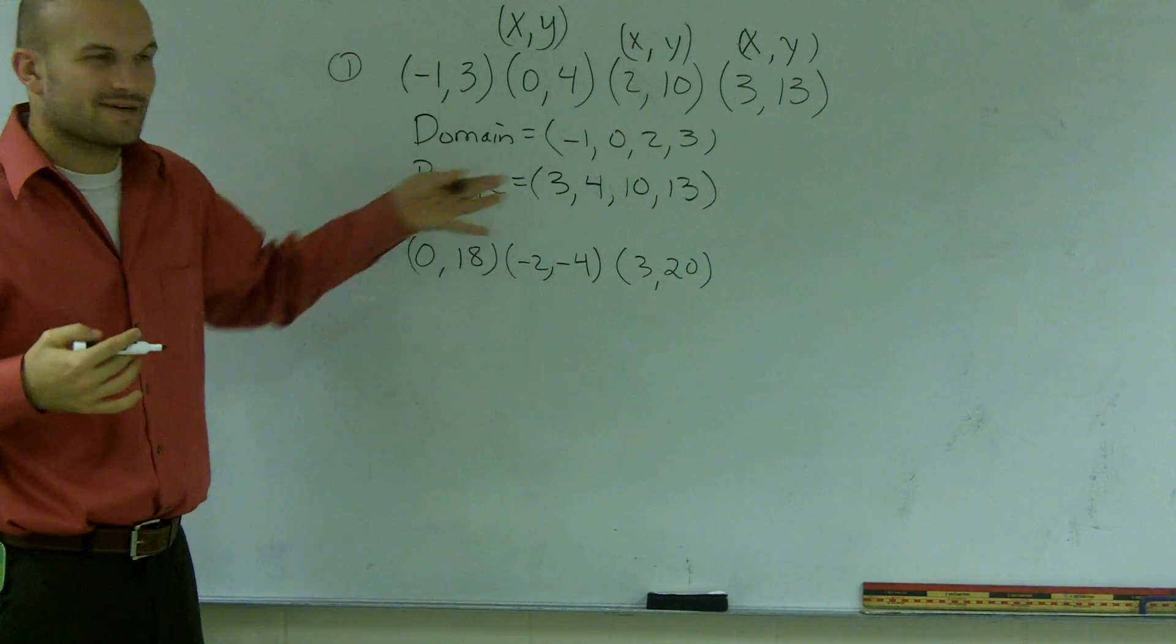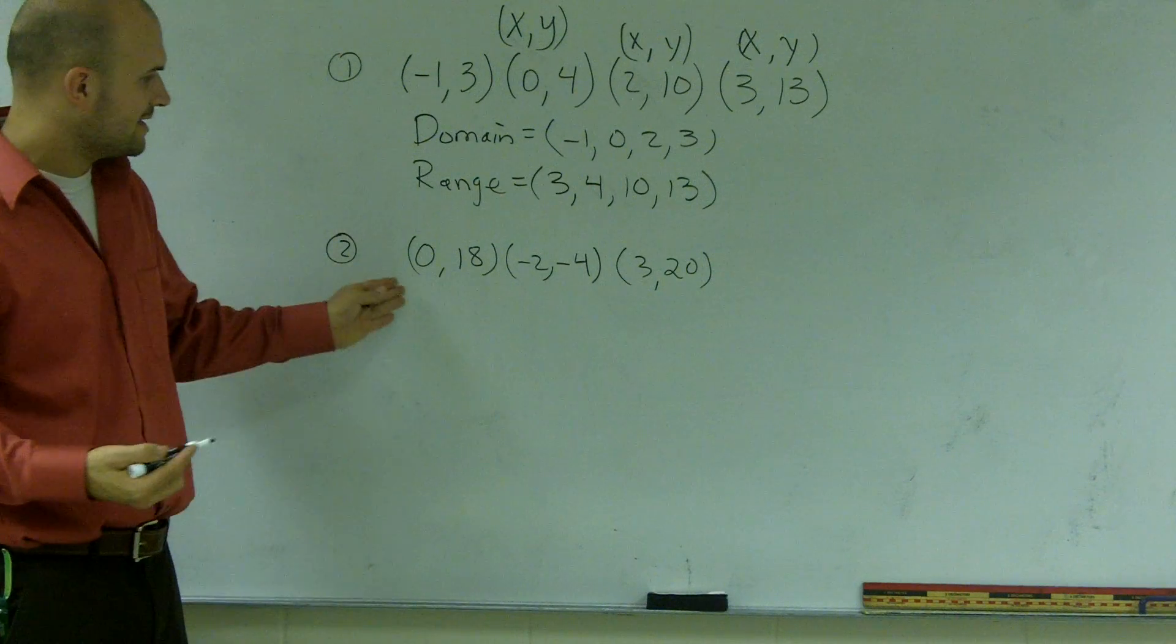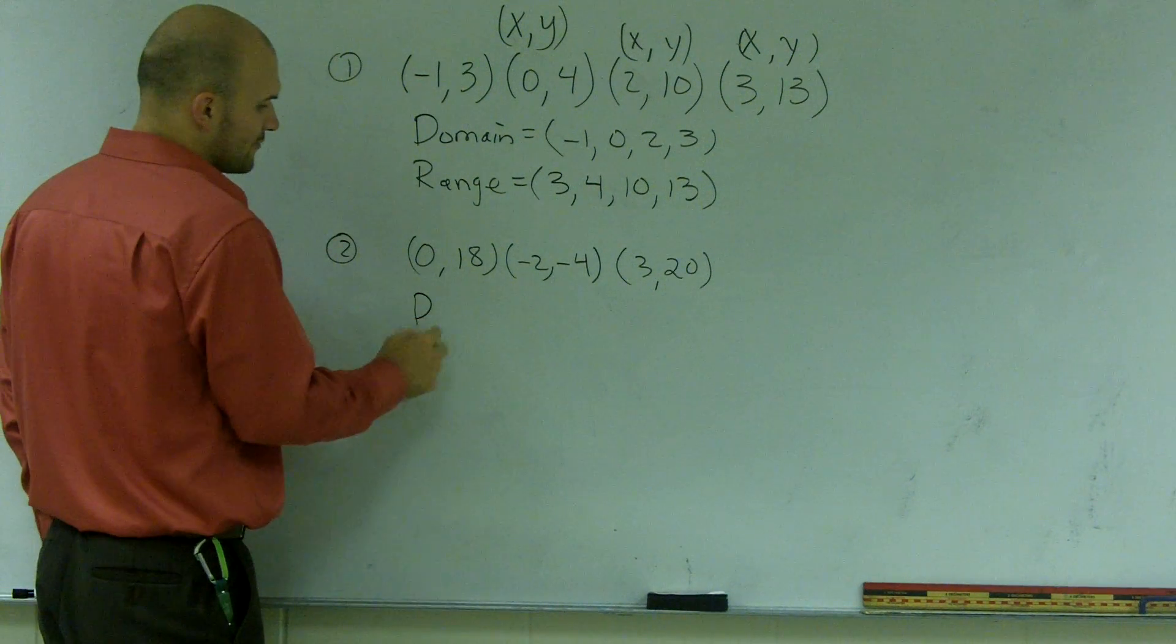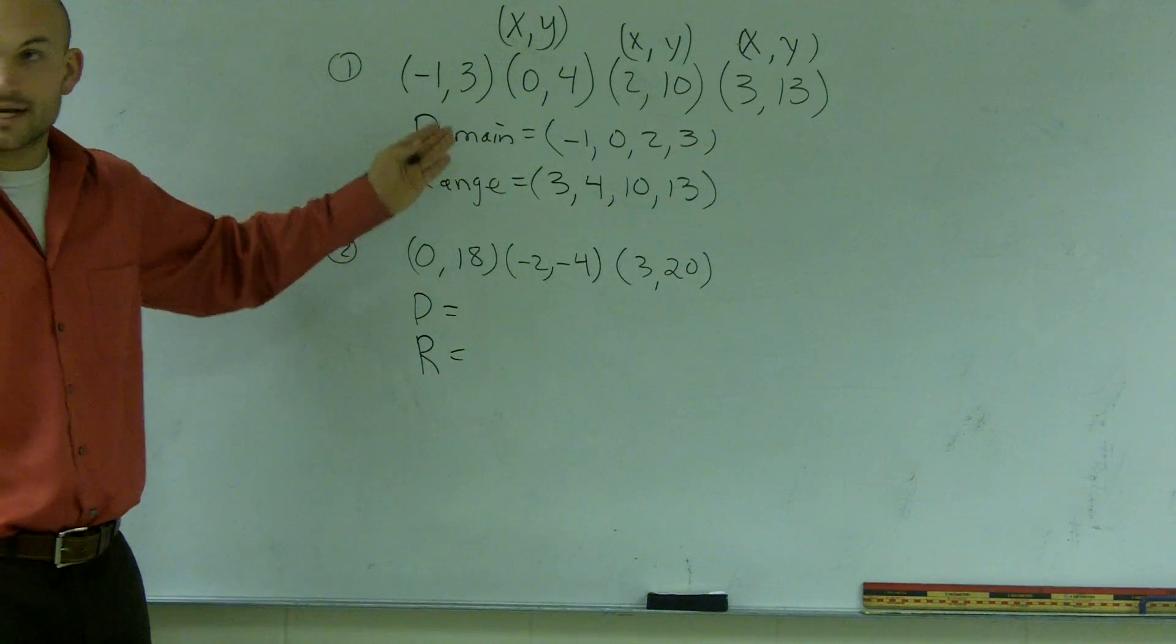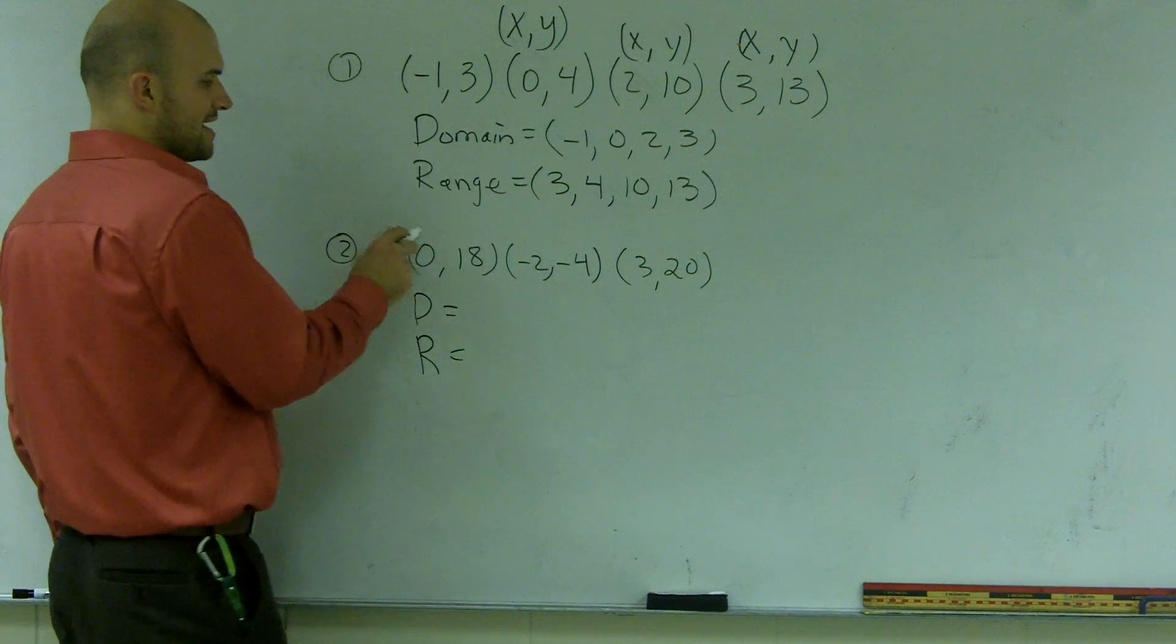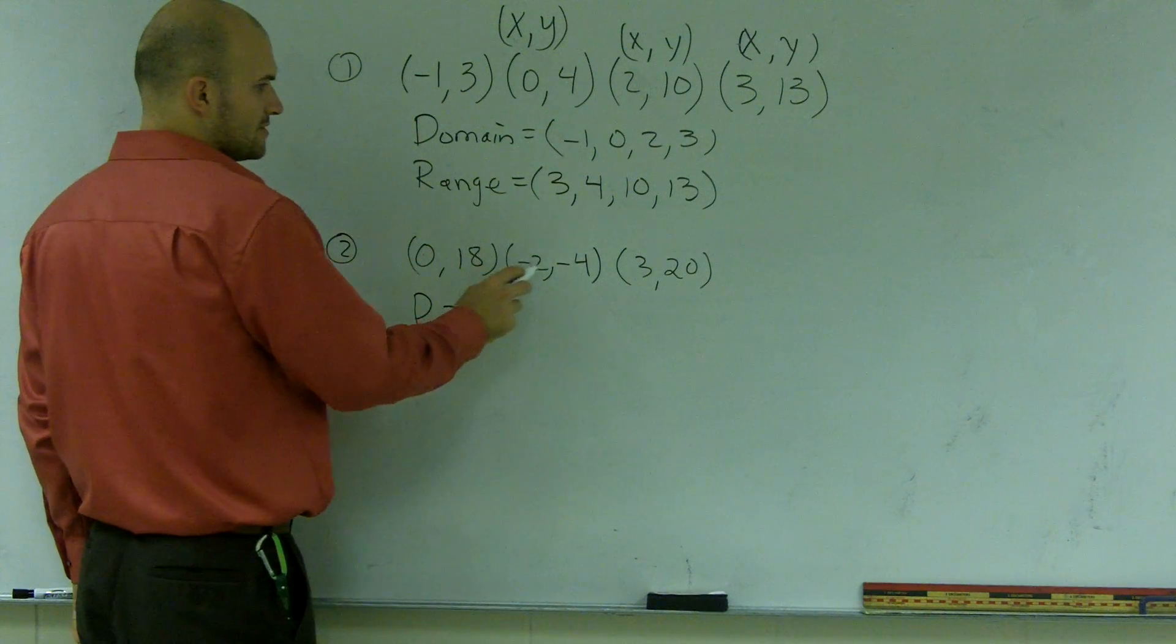And so, this problem is really nothing different, it's just another example. Again, if I want to find the domain and range when given a set of coordinate points, you take the x values. So, for my domain, it would be 0, negative 2, and 3.